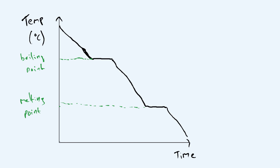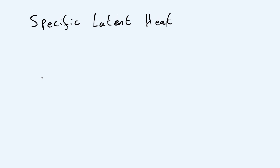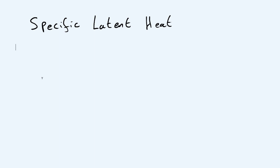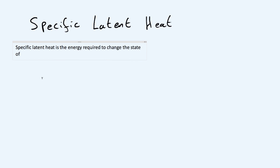Now moving on to specific latent heat. Latent heat is not precise enough on its own because it depends on how much substance you have. Specific latent heat is the energy required to change the state of one kilogram of a substance without changing its temperature. So if you have one kilogram of a substance, the specific latent heat is the amount of energy needed to change its state without changing its temperature.